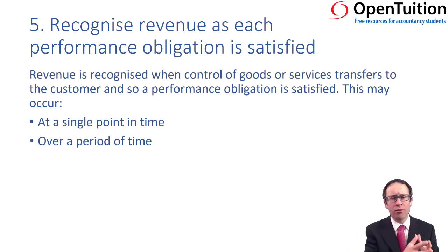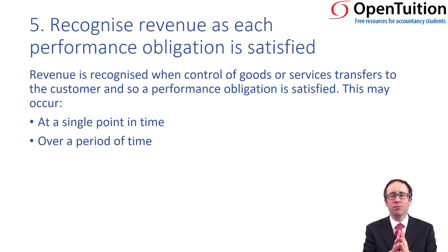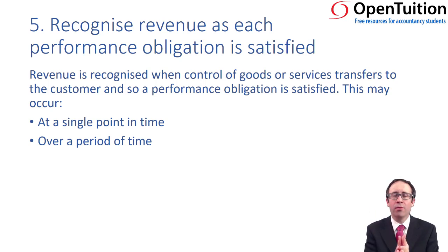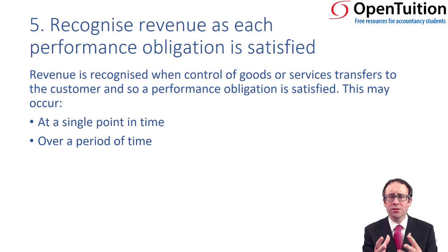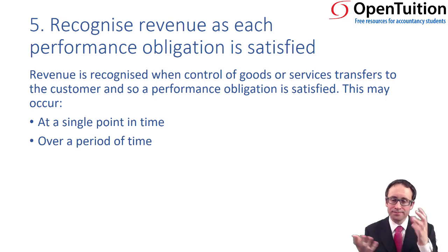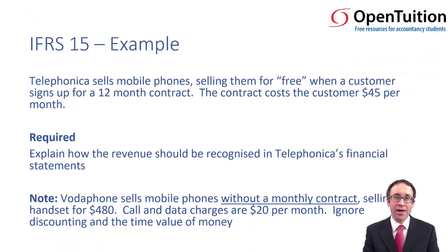With our example previously with the entertainment system, the performance obligation for the actual entertainment system itself was taking place at a single point in time. When that good is sold, that's when the control is transferred to the customer, so you recognize it at the point in time of the sale. However, the repair and maintenance or correction of any damage over a period of two years — you're going to have to recognize that over that period of time, from when we entered into the transaction to when that two-year period is complete.